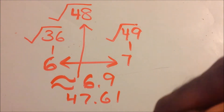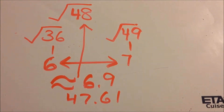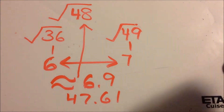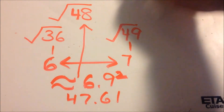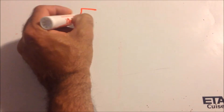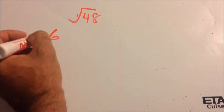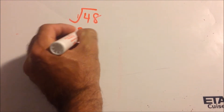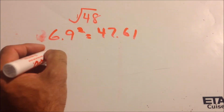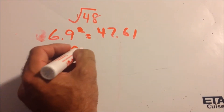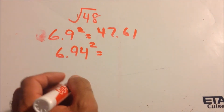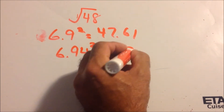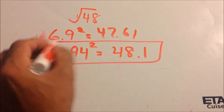We multiplied to the tenths place last video. Now let's go even further to the hundredths place. We already said 6.9 squared is 47.61. We're trying to get very close to 48. So what if we tried 6.94? We do 6.94 times 6.94 and we get 48.1 — that's over.